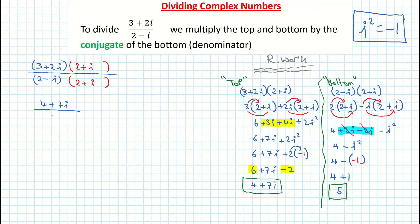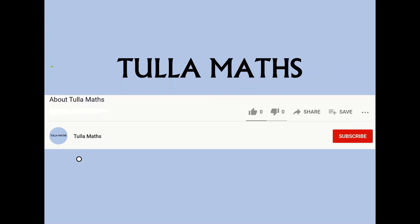Bringing that over to the question: 4 plus 7i all over 5 — and that is our answer. That's our division of complex numbers. All you're trying to achieve is that the number on the bottom of your fraction becomes a real number with no i. It's okay to have an i on the numerator, but not on the bottom. Thank you for watching another tutorial video from Tullamaths — make sure and subscribe.